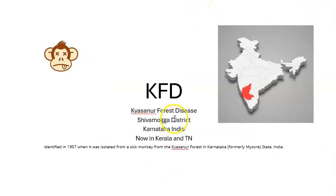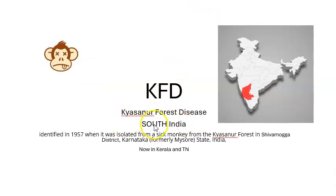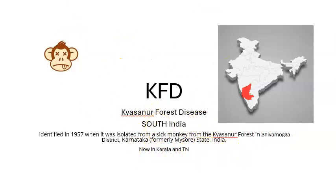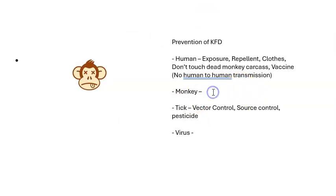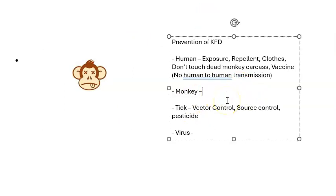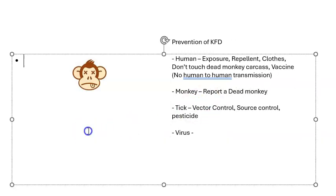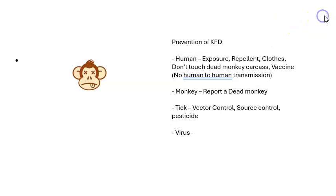In summary, KFD (Kyasanur Forest Disease) is now found across South India — first identified in Kyasanur Forest in Shimoga district, Karnataka, it has spread to surrounding states. One important point: if you find a dead monkey, you must report it to health authorities to help control the disease.